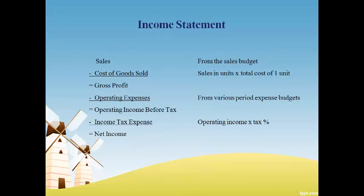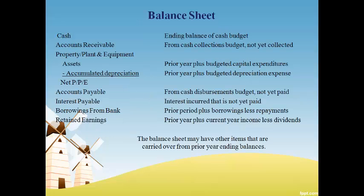The individual budgets and the cash budget are used to prepare the income statement. Sales come from the sales budget. The cost of goods sold uses the sales in units from the sales budget and the total cost for one unit stated on the cost sheet. Operating expenses were estimated on the period expense budget, and income tax is a standard percentage of operating income. Items needed for the budget balance sheet are estimated by individual budgets. Not all amounts on the balance sheet are listed — the accountant uses last year's balance and some judgment to estimate other amounts.